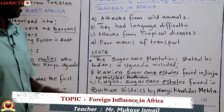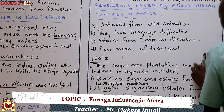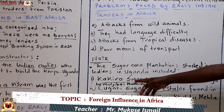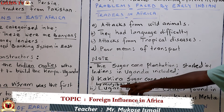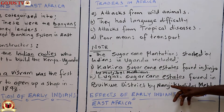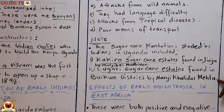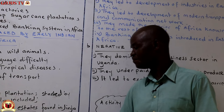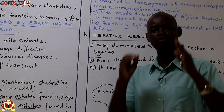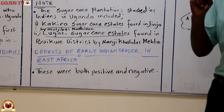The sugarcane plantations started by Indians in Uganda include: Kakira Sugarcane Estate, found in Jinja, started by Muljibhai Madhvani; and Lugazi Sugarcane Estate or plantation, found in Buikwe district in Lugazi, started by Nanji Kalidasi Mehta. He did not only start this — they have other companies currently started, like a cable construction company. We also have the sweet industry constructed by Kakira Sugar Works. These people have made a lot of contributions to our country Uganda.